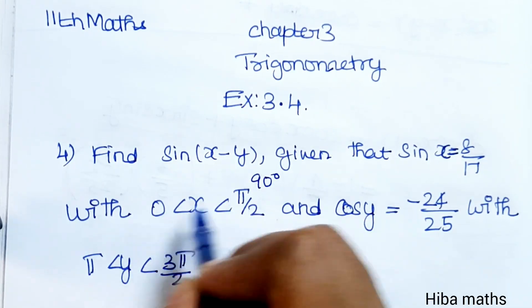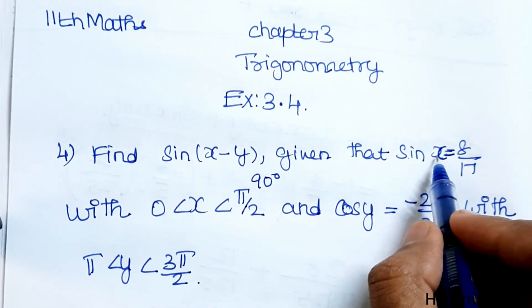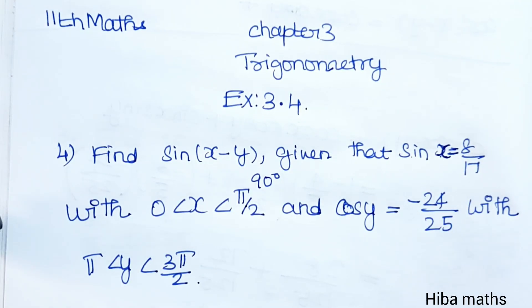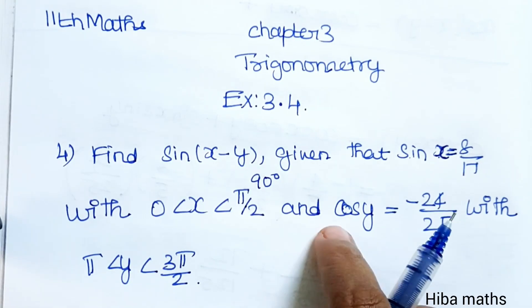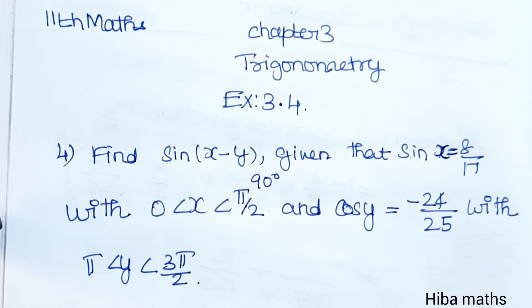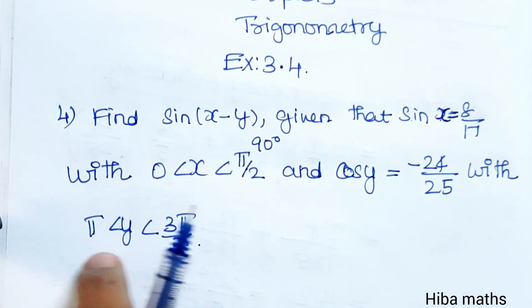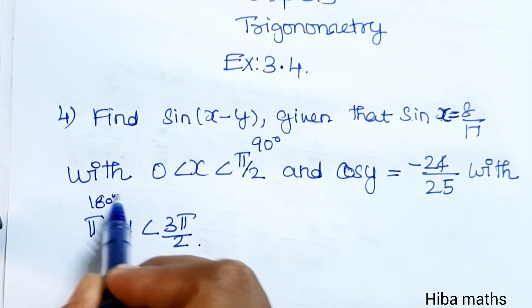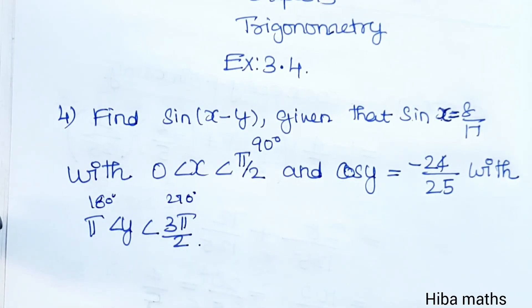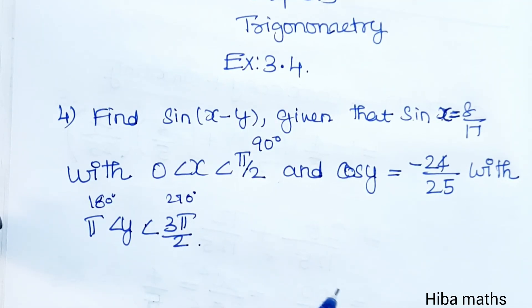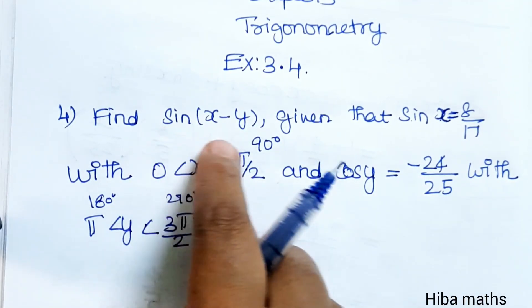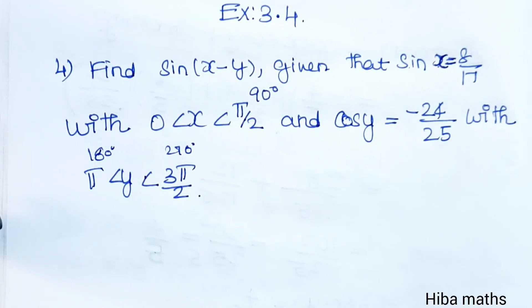Since x is between 0 and pi by 2, that is 90 degrees, x lies in the first quadrant. And cos y is equal to minus 24 by 25, with y is greater than pi and less than 3 pi by 2, so y is between 180 degrees and 270 degrees, meaning y lies in the third quadrant.